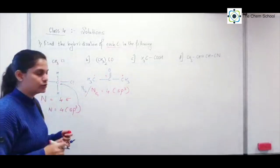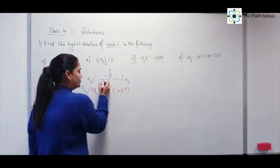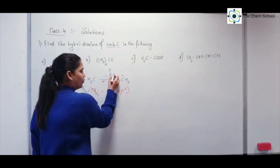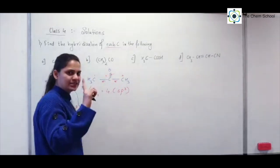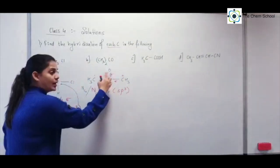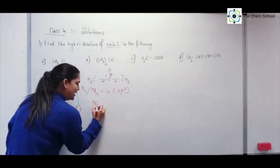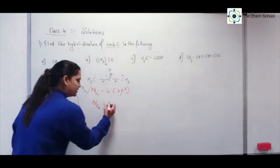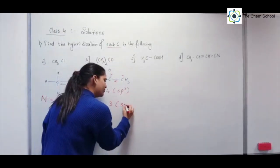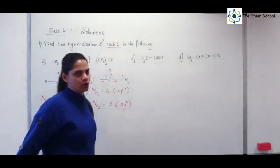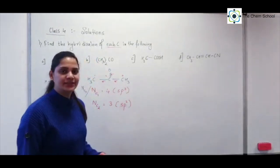Now only carbon 2 (the central carbon) remains. In a double bond, one bond is sigma and one is pi. Carbon 2 forms 3 sigma bonds total — no lone pair — so N equals 3. We take 1s and 2p orbitals, so the hybridization for carbon 2 is sp2.